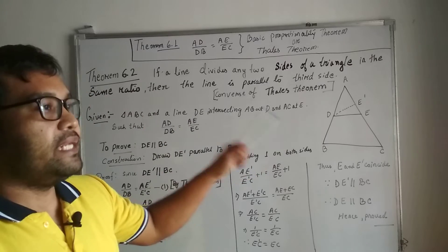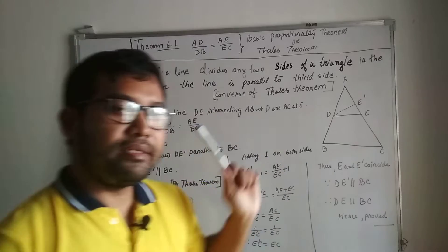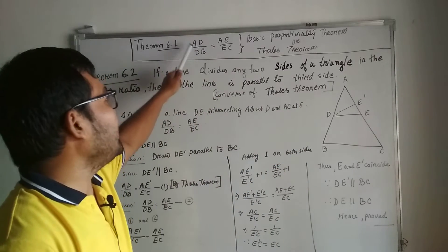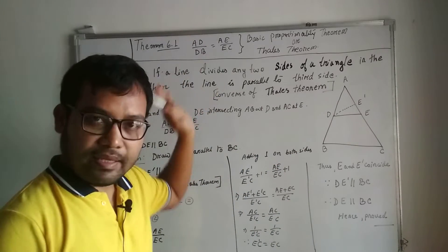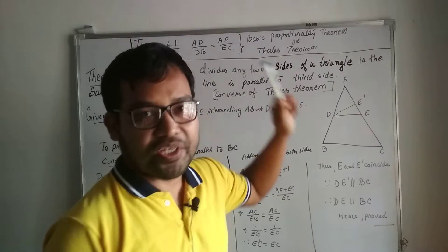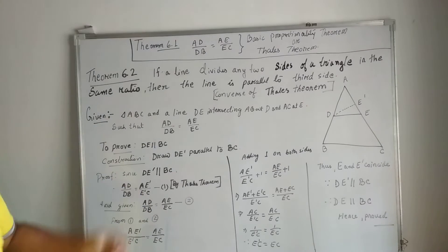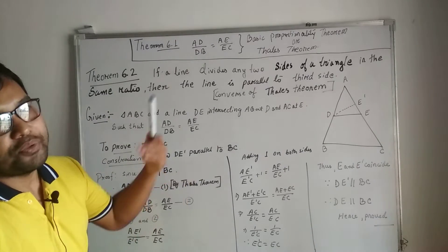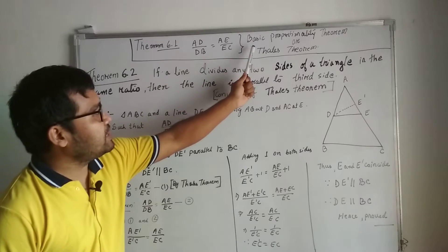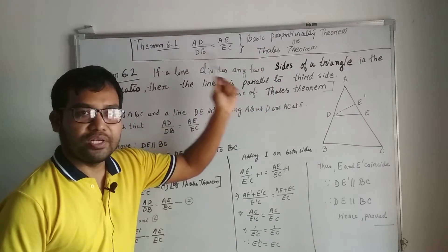Theorem 6.1 states: if a triangle is drawn and the line DE is parallel to BC, then the sides are in the same ratio, that means AD by DB equal to AE by EC. This is known as basic proportionality theorem or Thales theorem.